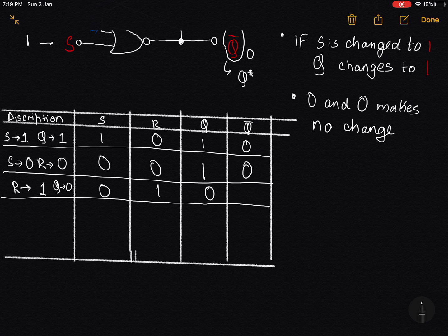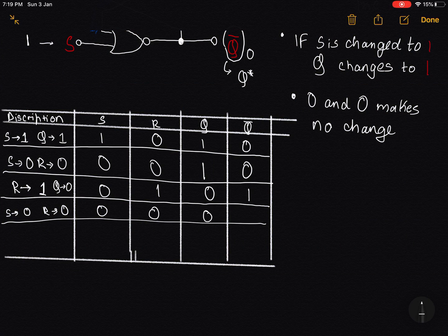So if our Q is 0, then Q complement is obviously 1 because they cannot be the same. And again, if we look at our S and R values, just setting them up to be 0 and 0 again, you will again have no change to the outputs of Q and Q complement.